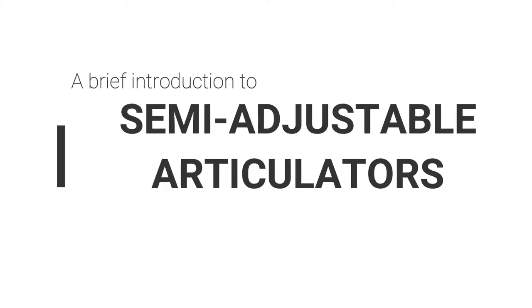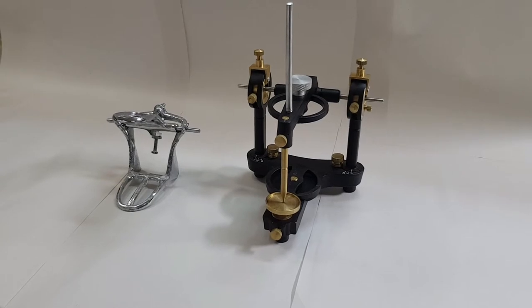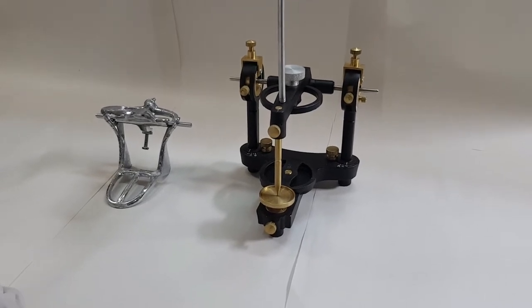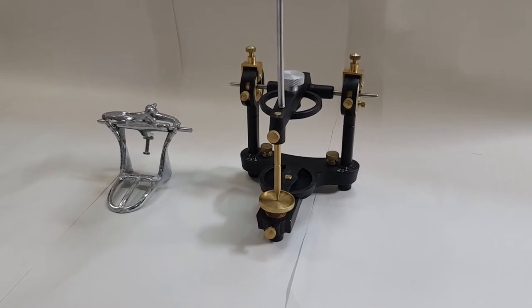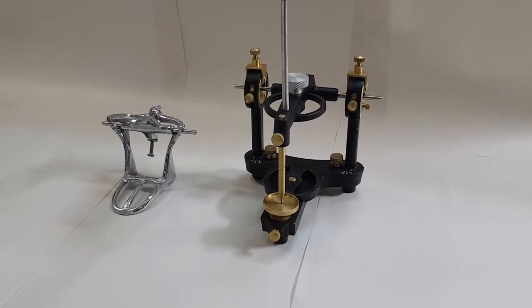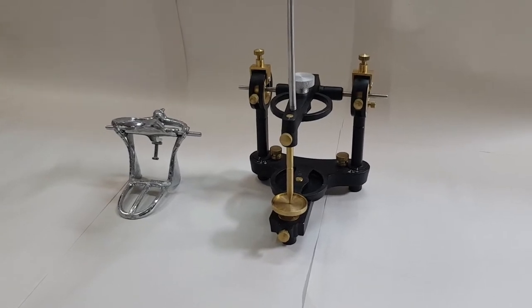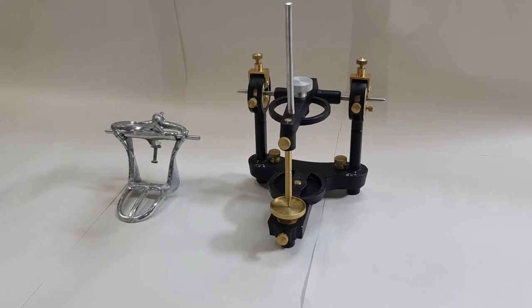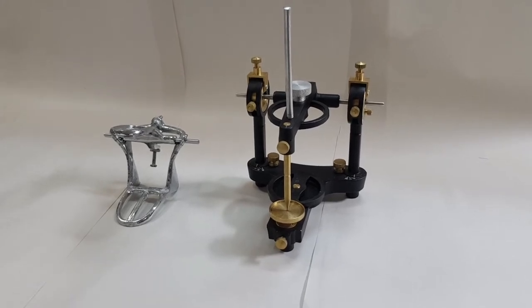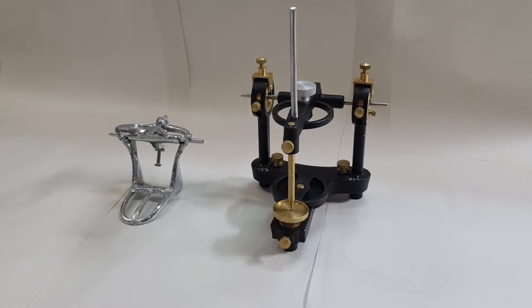In this video, we'll be discussing articulators, the process of articulation, and the method that we will be adopting for articulation in our laboratory. What is an articulator? An articulator is a mechanical hinge device used in dentistry to which plaster casts of the maxillary and mandibular jaw are fixed, which reproduces some or all of the movements of the mandible in relation to the maxilla.